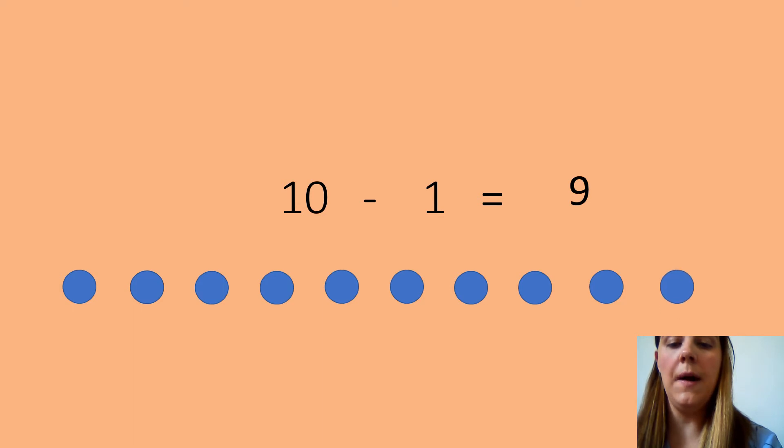And we need to cross out 1. And we count the rest: 1, 2, 3, 4, 5, 6, 7, 8, 9. And our answer is 9. Fantastic. Write the number sentence down.